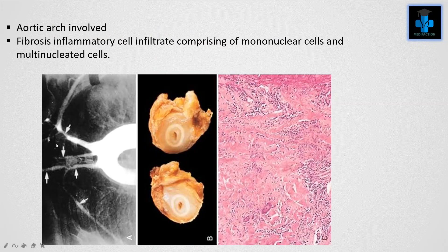Here we can appreciate the aortic arch being involved. This is the aortic arch, and here we can see the vasculitis with fibrosis, inflammatory cell infiltrate comprising mononuclear cells and multinucleated cells.